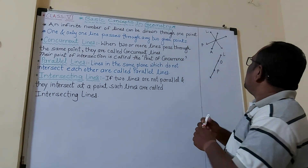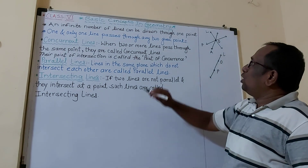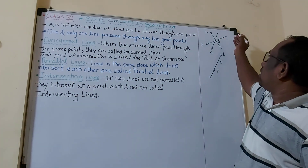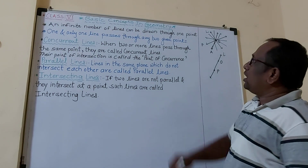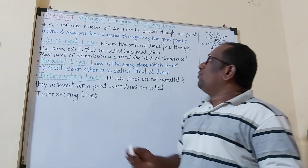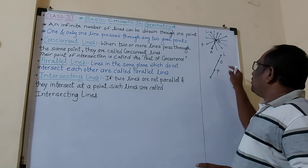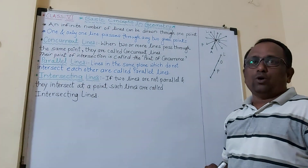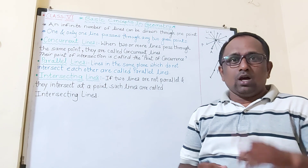So to repeat: the first property is that an infinite, uncountable number of lines can be drawn through one point O. The second property is that one and only one line passes through any two given points — for example, point O and point P. Only one line passes through these two points.